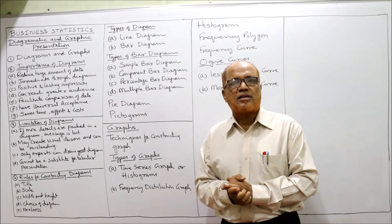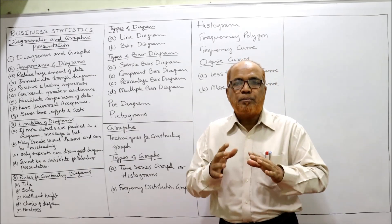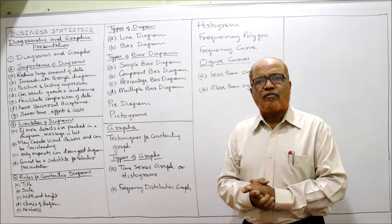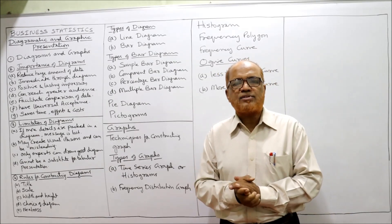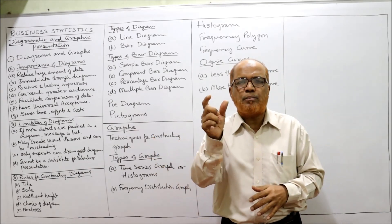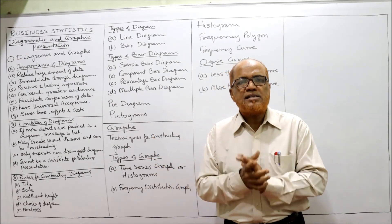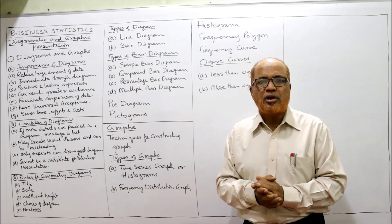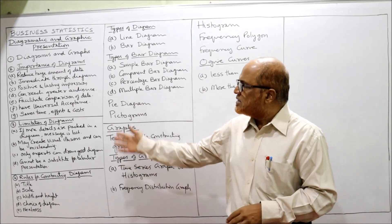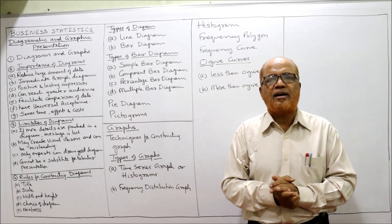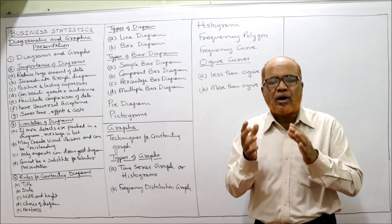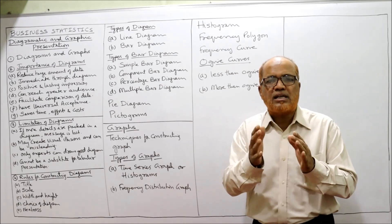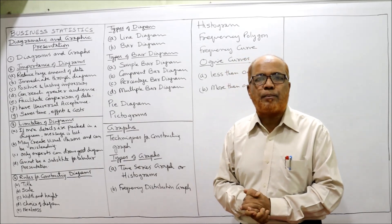Graphs and diagrams play a very important role in statistics in the presentation of data. Importance of diagrams: First, diagrams and graphs reduce the huge amount of data into a simple, attractive manner so the reader can easily understand the message instead of going through huge amounts of data. Secondly, the message will be conveyed through diagrams immediately without much waste of time — diagrams give the advantage that a person can get the complete message easily without any loss of time.